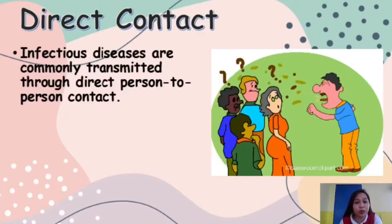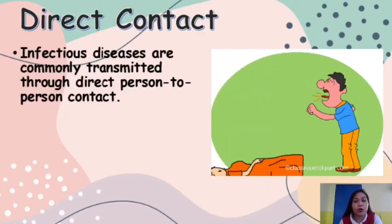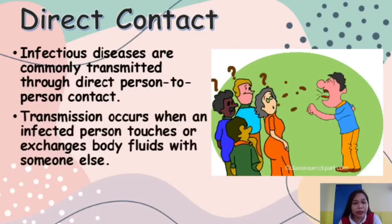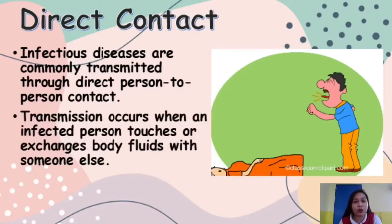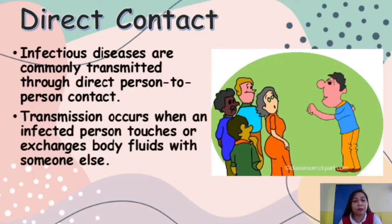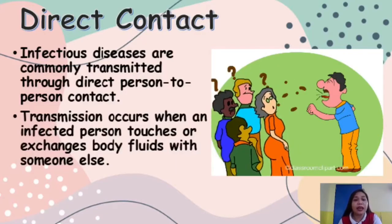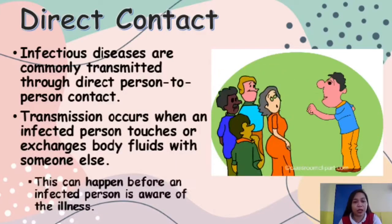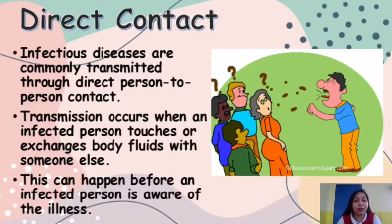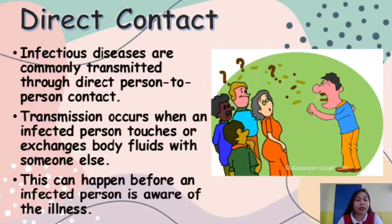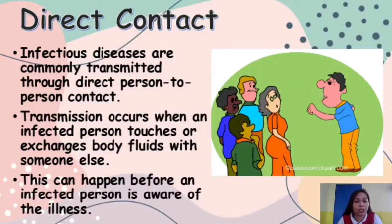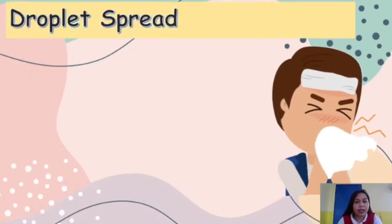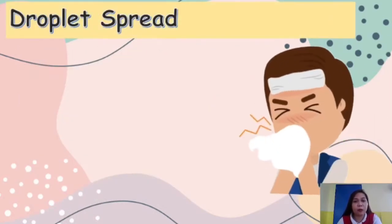Infectious diseases are commonly transmitted through direct person-to-person contact. Transmission occurs when an infected person touches or exchanges body fluids with someone else, and this can happen before an infected person is even aware of the illness.